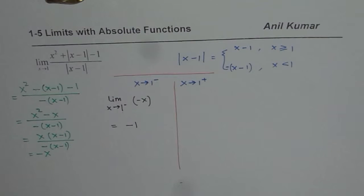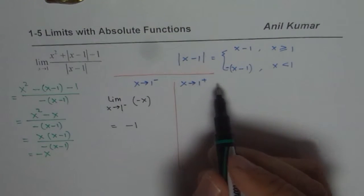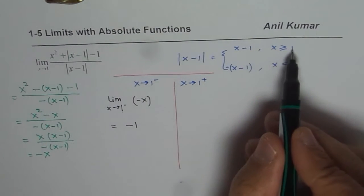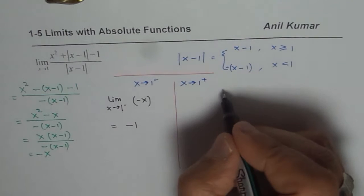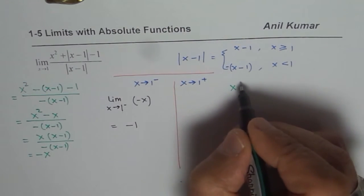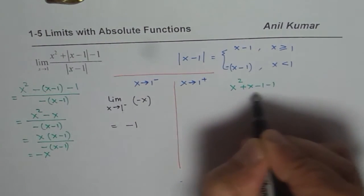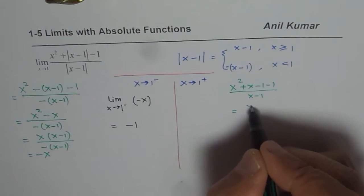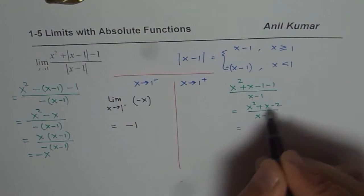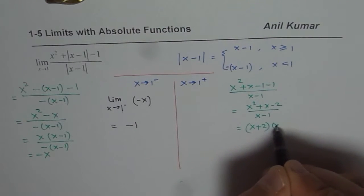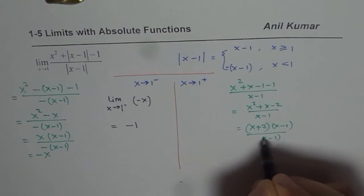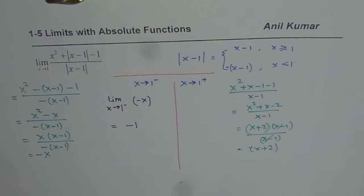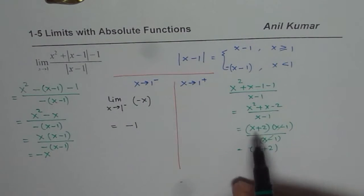Now let us again see the same function. And this time, we will use the value of positive when x is greater than 1. In that case, what happens to the function? Now I could write my function as x square plus x minus 1 minus 1 over the same, it is x minus 1. So we are trying to go a bit faster here. x square plus x minus 2 over x minus 1. This could be factored as x plus 2 times x minus 1 over x minus 1. And you can cancel these two, getting x plus 2 as a result. So if x value is greater than 1, that is your function.